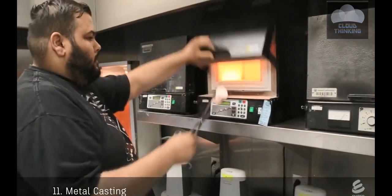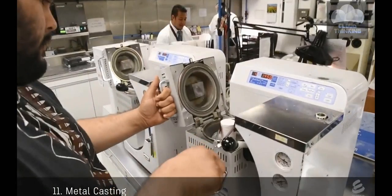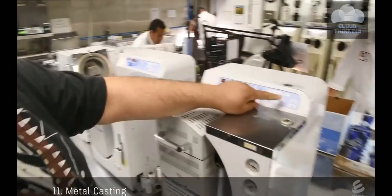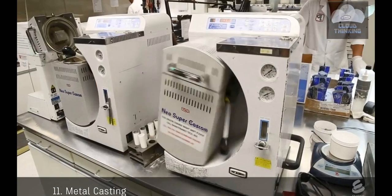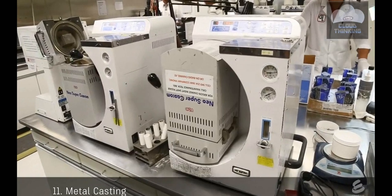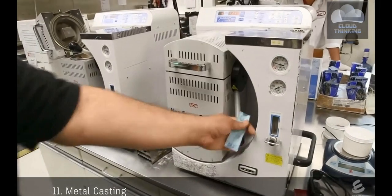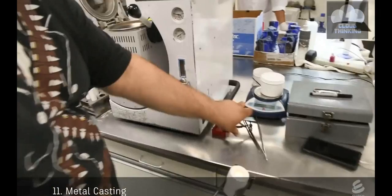Directly from the oven, the investment is inserted into a vacuum casting machine. Already inside is a precious metal alloy. The machine flips over and a vacuum pulls the molten metal into the void space. The casting is removed from the machine and left to cool.